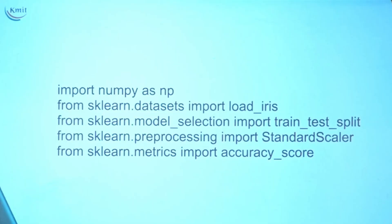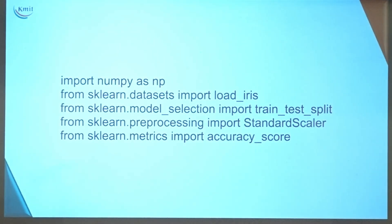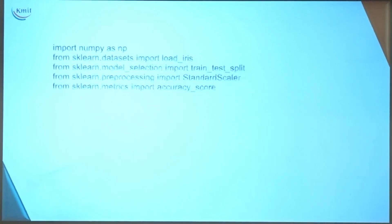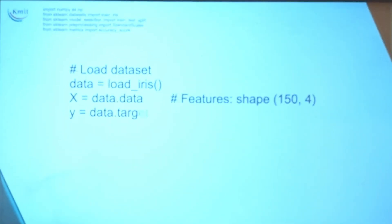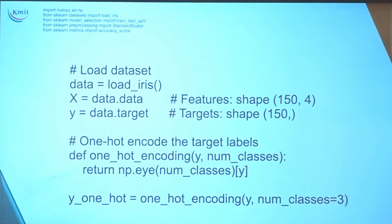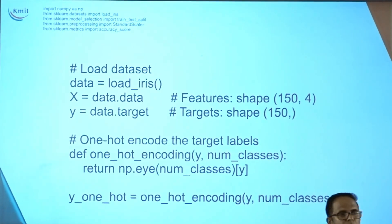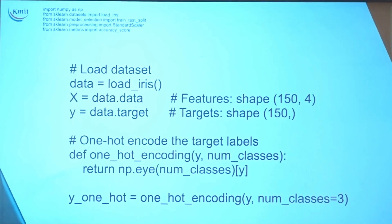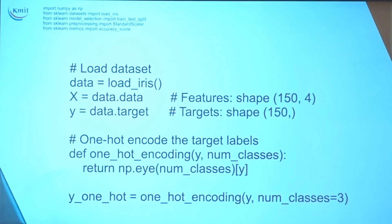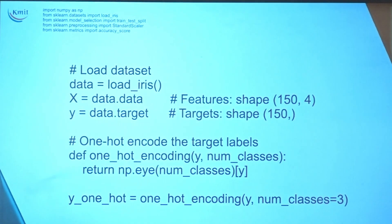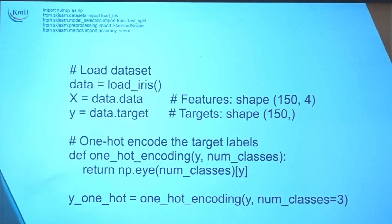In the last class, first we imported our libraries, then loaded the dataset from sklearn and used one-hot encoding, which is a very important encoding mechanism to improve performance, representing categories as zeros and ones.